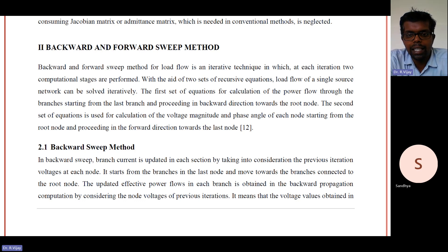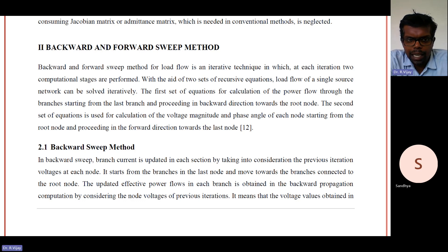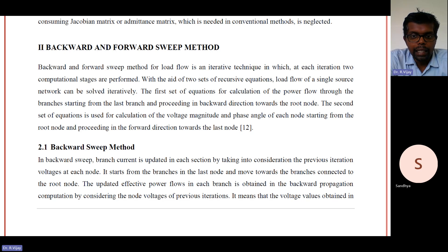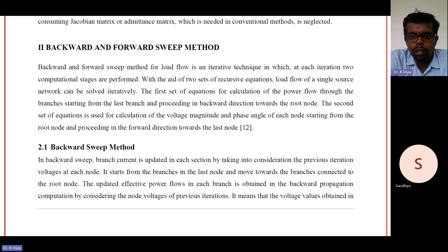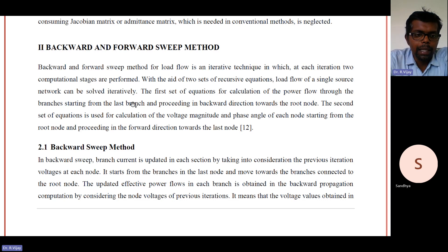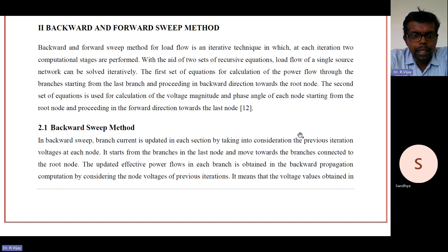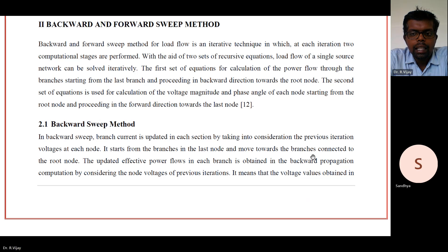This second set is similar to the Newton-Raphson and Gauss-Seidel method, where we start from each node beginning from the root node. In the backward sweep method, branch current is updated at each section by taking into consideration the previous iteration voltages at each node. The algorithm starts from the branches at the last node and moves towards the branches connected to the root node.